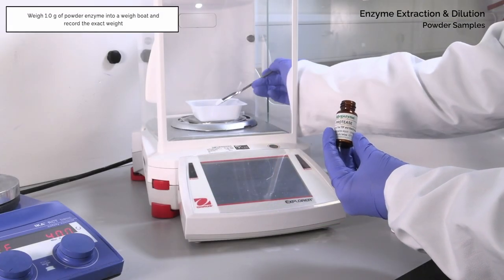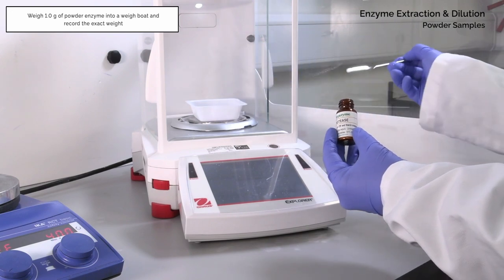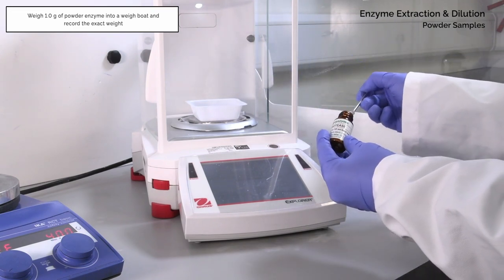For powdered samples, weigh 1 gram of powder enzyme into a weigh boat and record the exact weight.